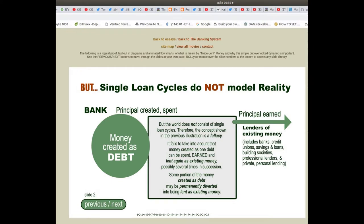Therefore, the concept shown in the previous illustration is a fallacy. It fails to take into account that money created as one debt can be spent, earned and lent again as existing money, probably several times in succession. Some portion of the money created as debt may be permanently diverted into being lent as existing money.